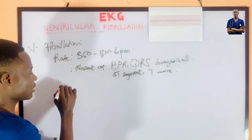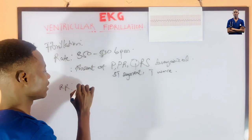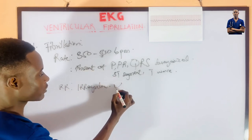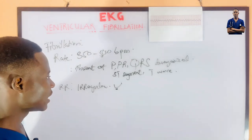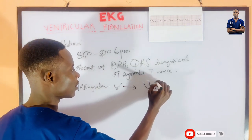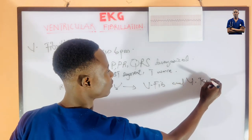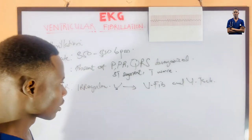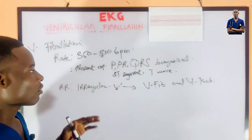Now let's look at the R-R interval. The R-R interval is irregular. Please take a very good note of this point — the irregular nature of V-Fib — because this helps us to differentiate between V-Fib and V-Tach, that is ventricular fibrillation and ventricular tachycardia, based on the irregularity of the QRS complex.